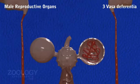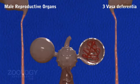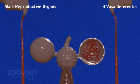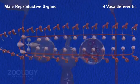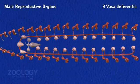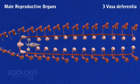Vasa deferentia: Vasa deferentia is a slender longitudinal wavy duct lying on the ventral body wall, parallel to the nerve cord, and extending forward from the 22nd to the 11th segment.